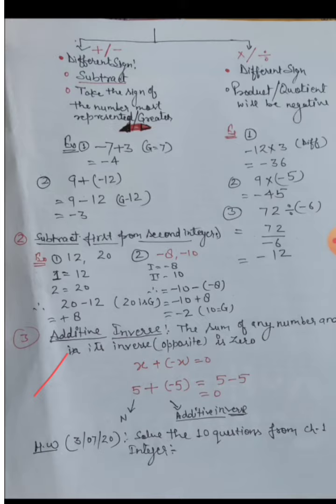Next and last topic today: additive inverse. Inverse means opposite. The sum of any number and its additive inverse is zero.